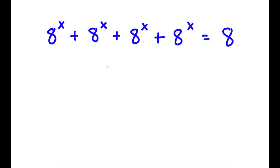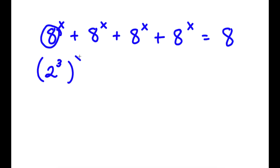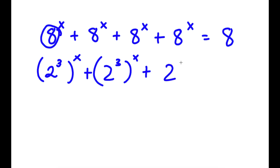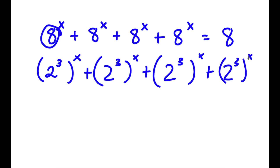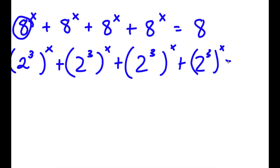To solve this, I'm going to start by replacing 8 with 2 to the power of 3. So now I have 2 to the power of 3 to the power of x, four times, is equal to 2 to the power of 3.